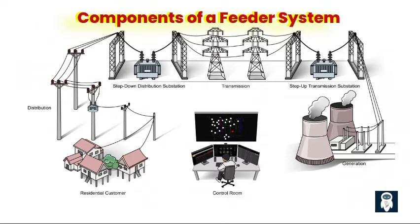Seventh, measurement and monitoring equipment — including energy meters, power quality analyzers, and SCADA systems — are installed to monitor and control electrical parameters, providing data on power consumption, voltage levels, and system performance to facilitate efficient operation and maintenance. Eighth, communication and control systems are used to monitor, control, and coordinate the feeder system, enabling remote monitoring, fault detection, and real-time control of components to facilitate efficient operation, rapid fault identification, and timely response to maintain system reliability.